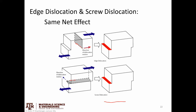Alternatively, the screw dislocation — the line at the edge of this half plane of atoms — could move in a different direction. Both result in the same displacement at the end.